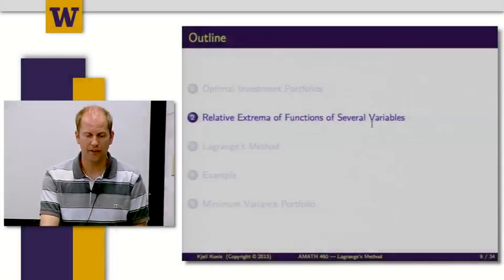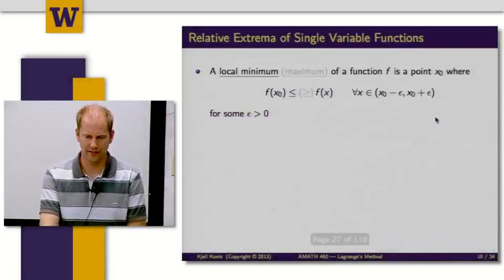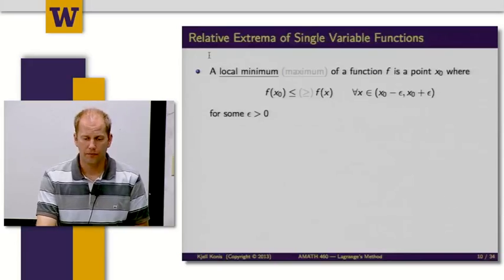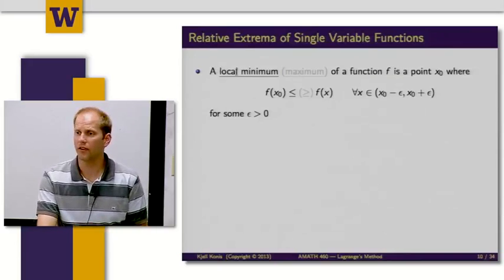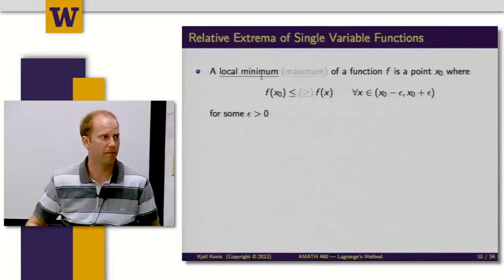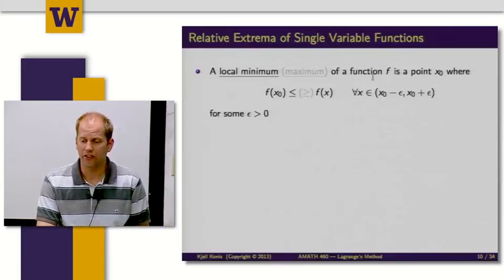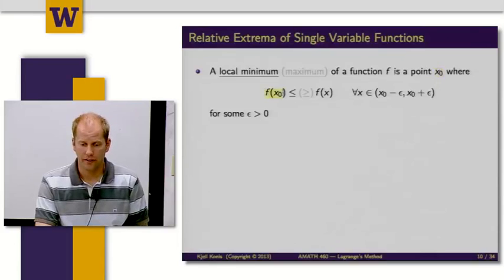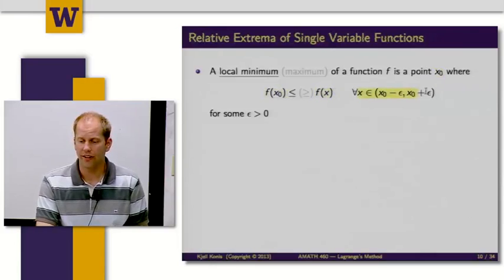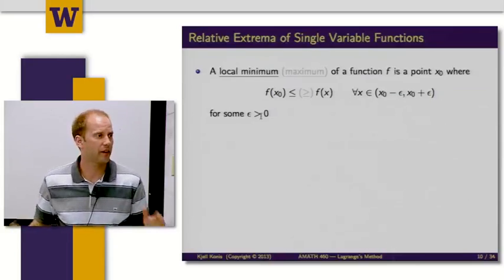The next topic is going to be relative extrema of functions of several variables. A local minimum of a function f is a point x0 that has the property that f(x0) is less than or equal to f(x) in some neighborhood around x0. So epsilon is just some value greater than 0.